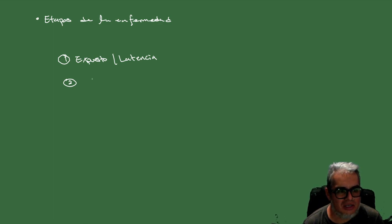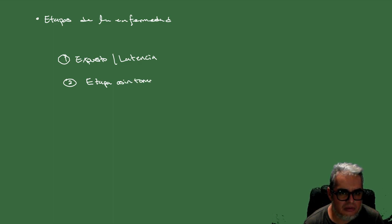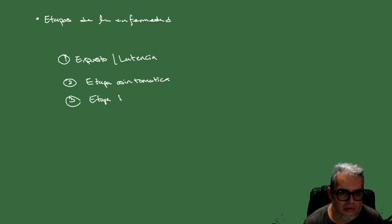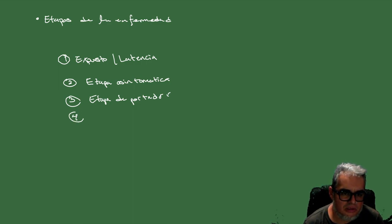Dos: ser portador asintomático y además ser infeccioso — la etapa asintomática. Tres: etapa de portador. Y finalmente, obtener algún tipo de inmunidad, que le llaman inmunidad pasiva.